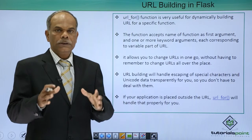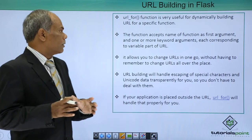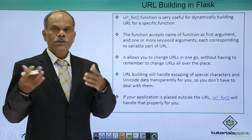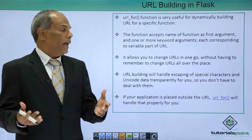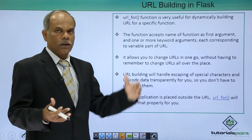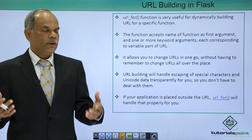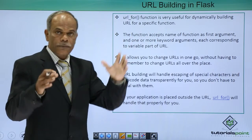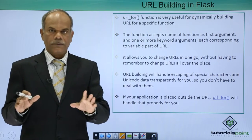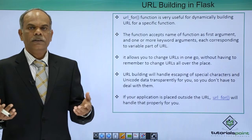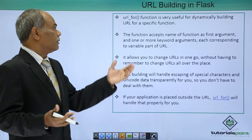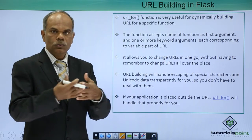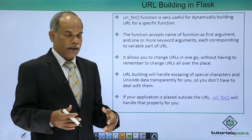This function accepts certain arguments: one is the function for which you want to find out the URL, and the other is one or more keyword arguments that may be provided to it. It accepts the name of the function as the first argument, which is mandatory, and if needed, certain keyword arguments may be provided which may be used to form the URL dynamically.